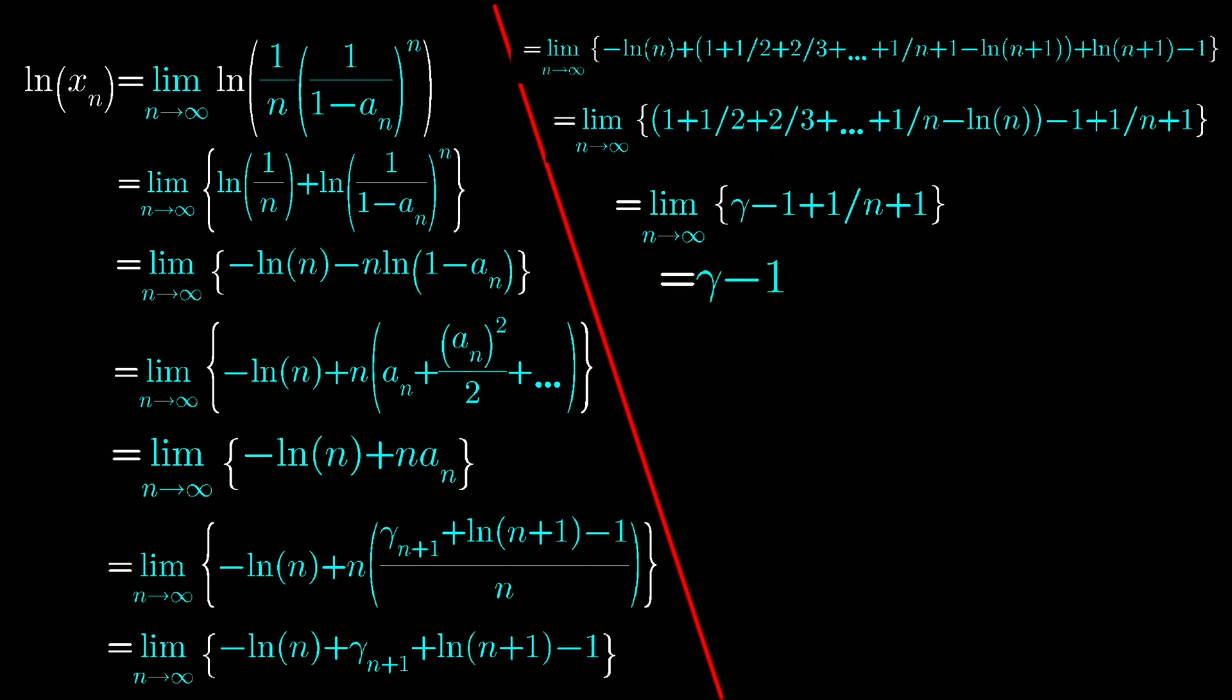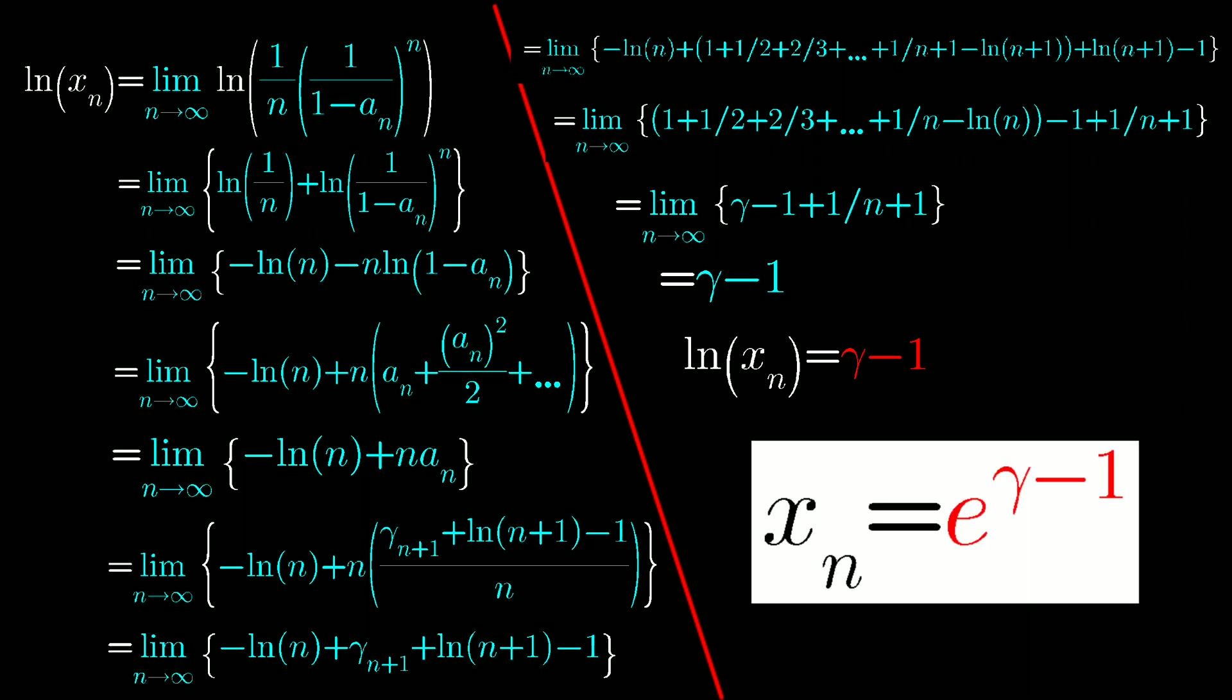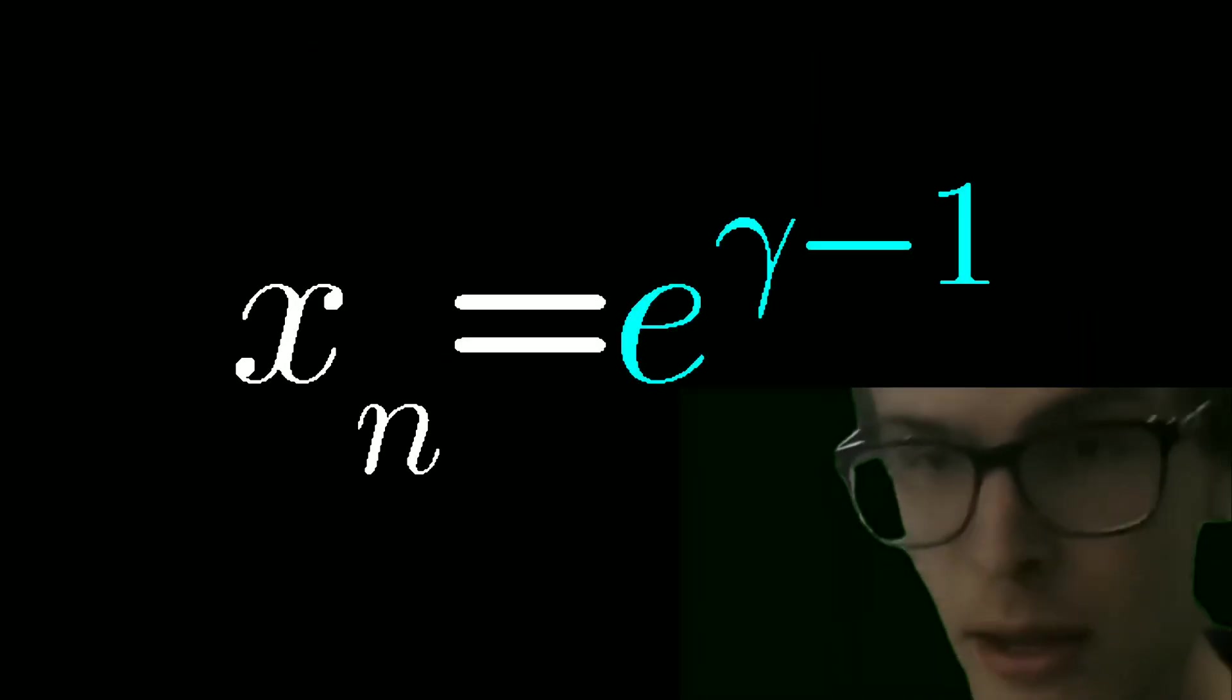So we have ln of xn is equal to gamma minus 1, and now we just have to take antilog on both sides. We get xn is equal to e to the power gamma minus 1, and this is our final answer.